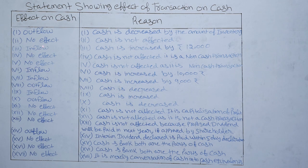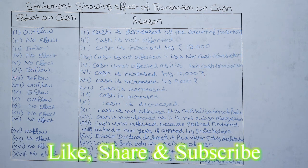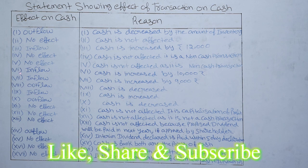For the sixth item — sale of fixed assets with book value ₹15,000 at a loss of ₹5,000 — the assets were sold for ₹10,000, resulting in a loss of ₹5,000. We consider only the cash value received. Effect: inflow. Reason: cash is increased by ₹10,000. For the seventh item — cash received from trade receivables ₹9,000 with discount allowed ₹1,000 — the total trade receivable was ₹10,000, discount of ₹1,000 was allowed, so cash received is ₹9,000. Effect: inflow. Reason: cash is increased by ₹9,000.